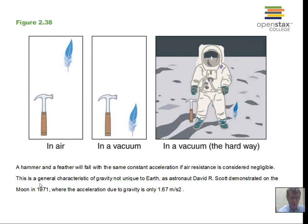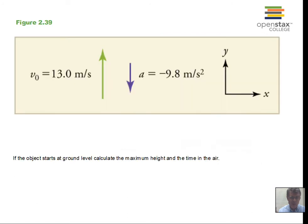Let's go ahead and do an example. Suppose we start at ground level, moving upward at 13 meters per second, with the acceleration due to gravity of the Earth present. What's the maximum height? What's the time in the air? Write down the variables and their values, and see if you can pick a proper equation to calculate the maximum height first. Pause and try that.